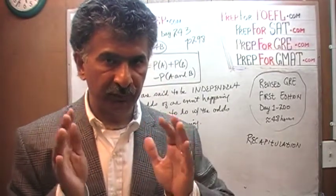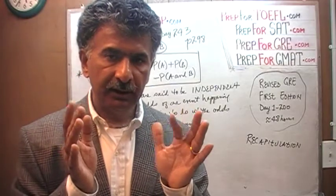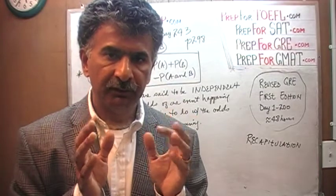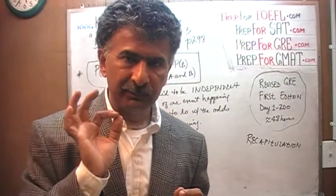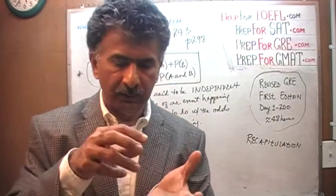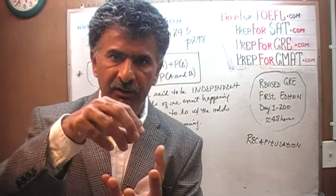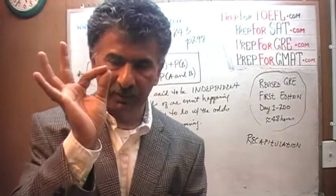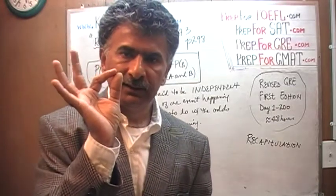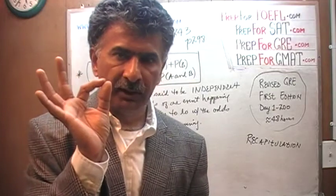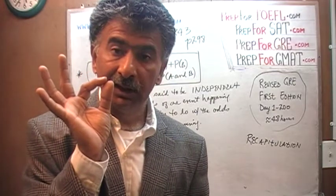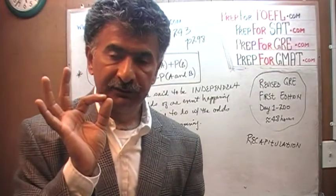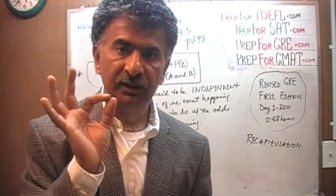The example I gave you: we put the names of boys and girls in a box and picked one person at random. The question was, what are the odds that the person picked was both a boy and a girl? The answer was zero, because the occurrence of one event precludes the other from happening. Such events are called mutually exclusive.